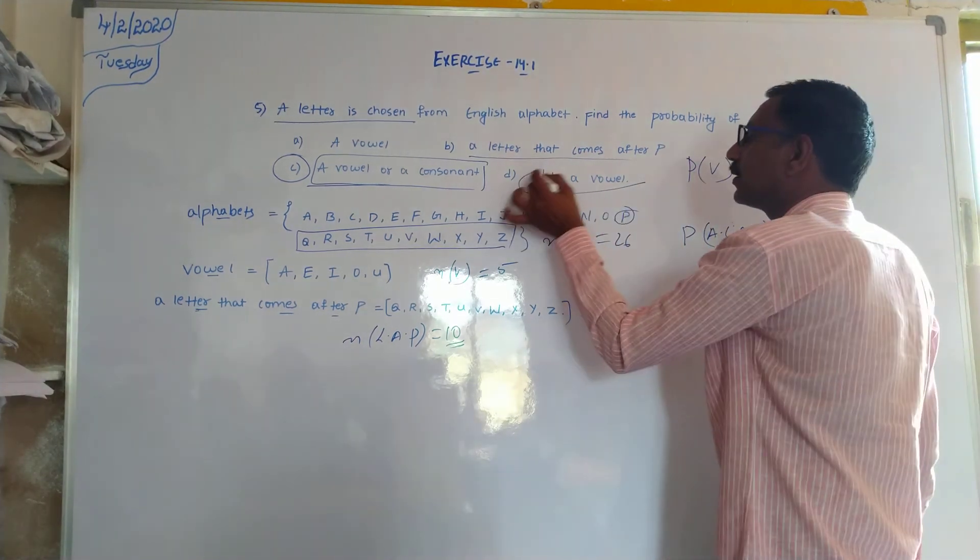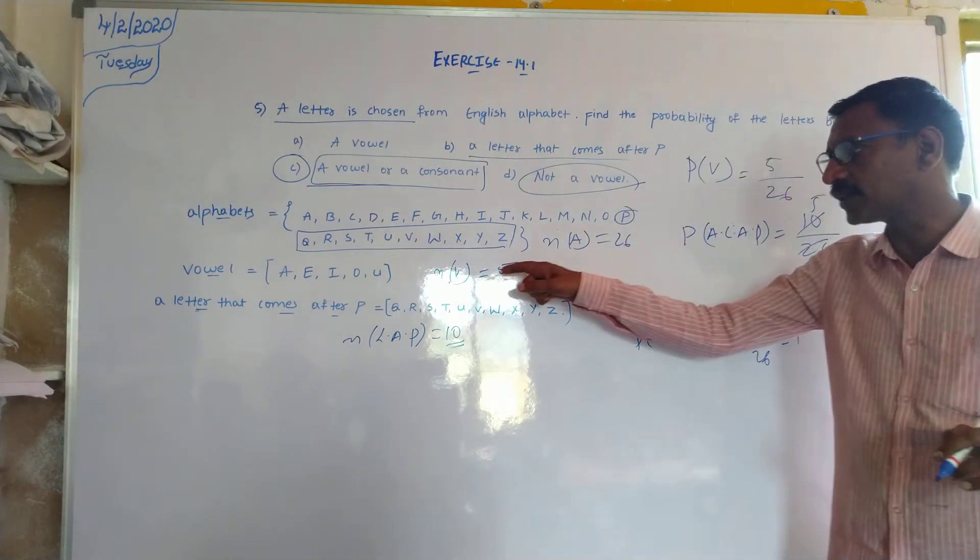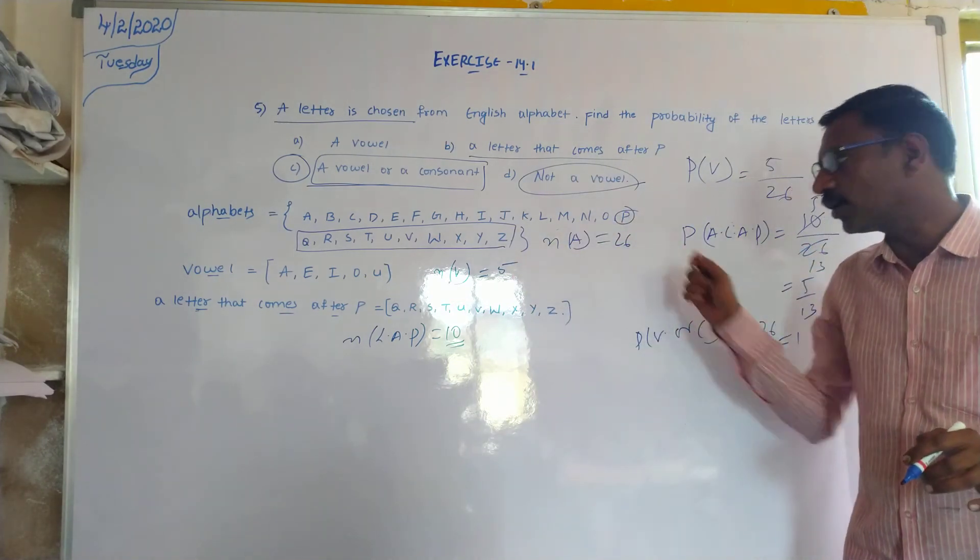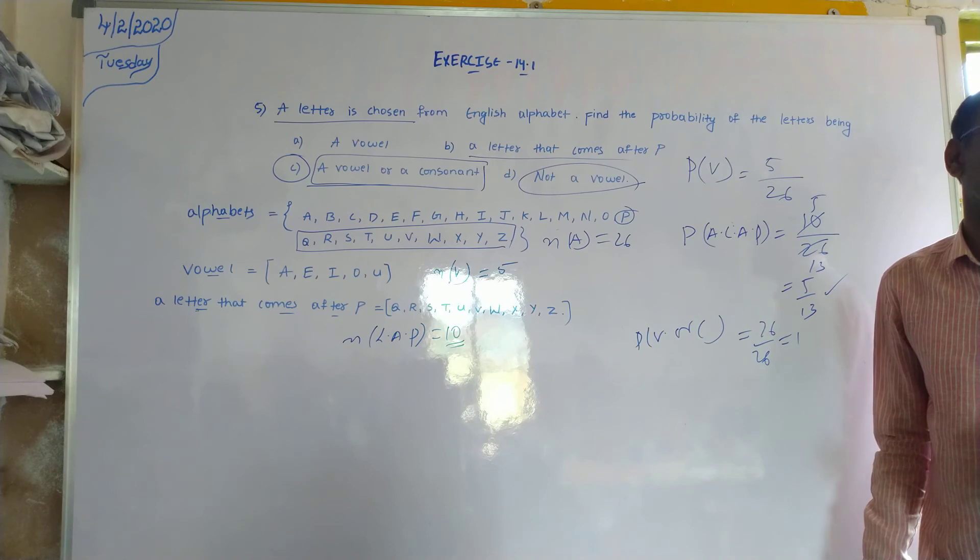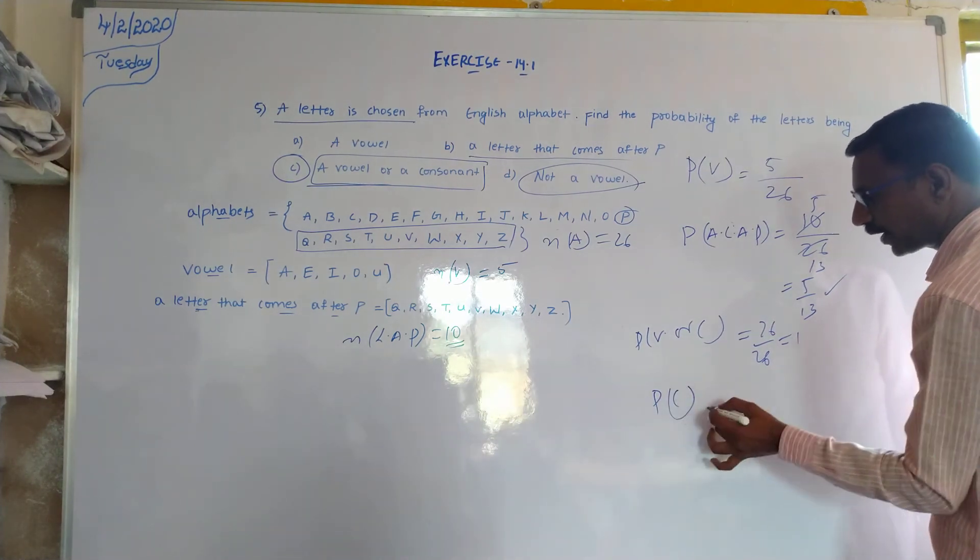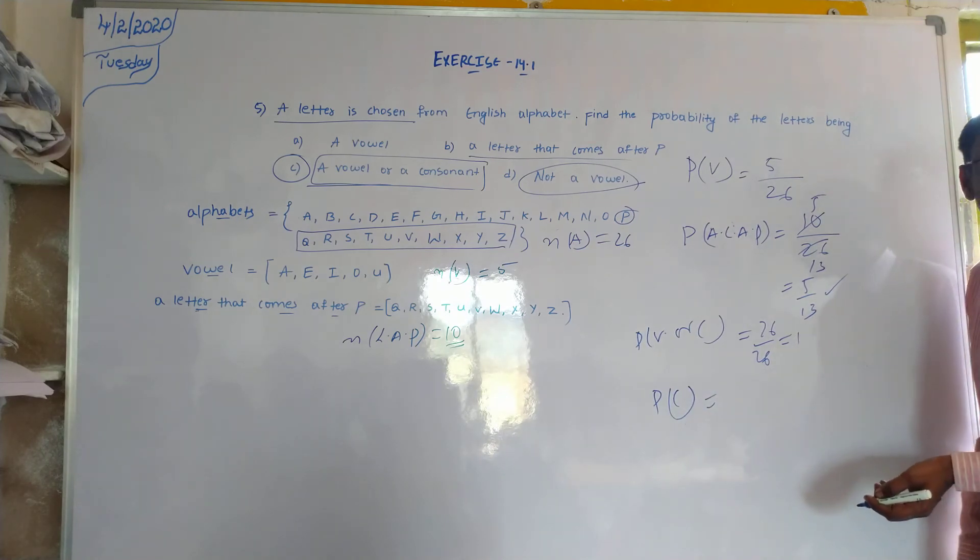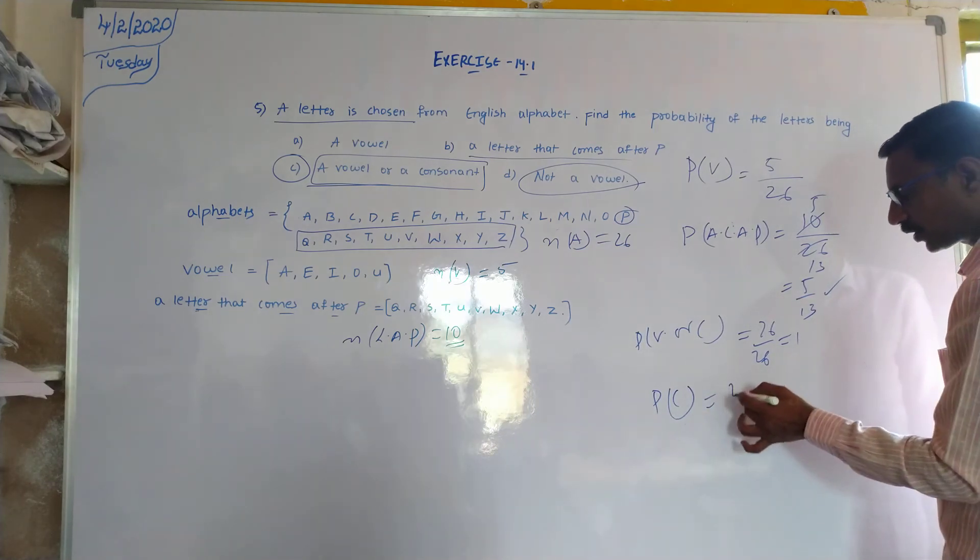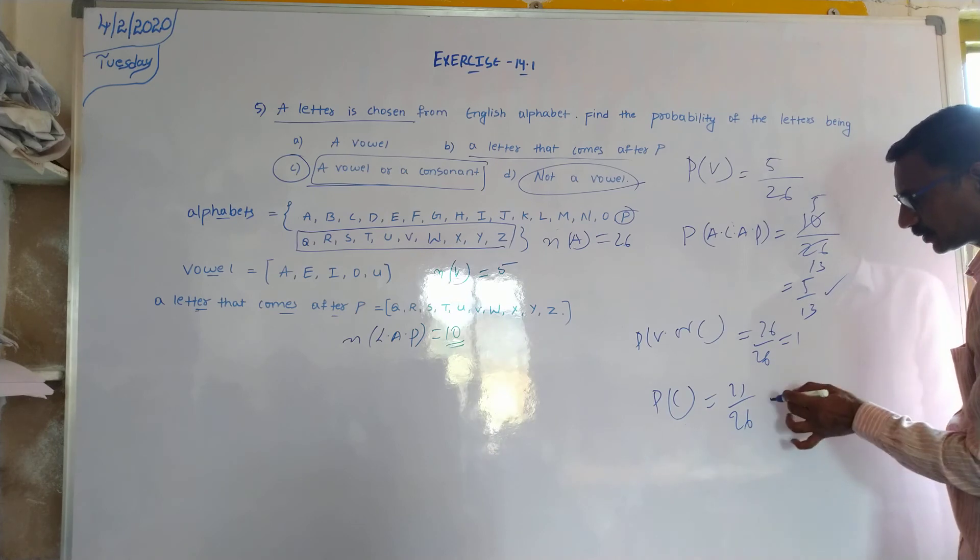Not a vowel. Vowel is 5. How are the 21? 21. So the probability of a consonant, not a vowel, how are the 21? 21 by 26.